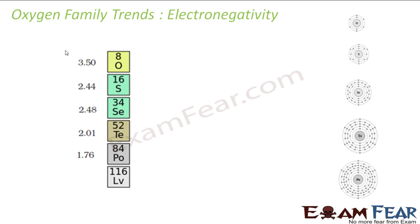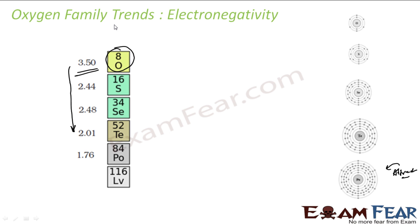The next trend is electronegativity. Electronegativity also decreases as we go down the group, due to the increase in size. Larger atoms are not able to attract electrons towards themselves as effectively. Therefore, oxygen has the highest tendency to attract electrons and is the most electronegative element in Group 16.